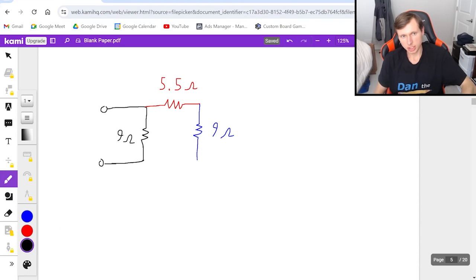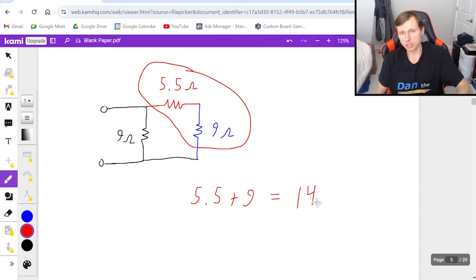And then just connect the lines back, and we have this. This is significantly better. Now hopefully you see that I'm supposed to add these two, which are in series. So 5.5 plus 9 gives me 14.5 ohms.